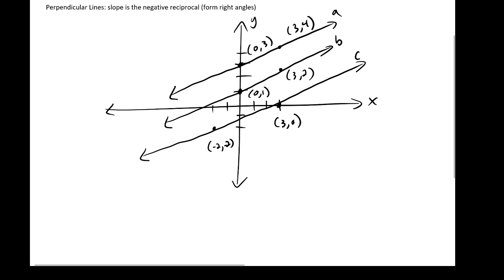Our directions are to determine which lines are parallel. Let's go ahead and get started. We're going to look at line A. In line A, we're going to need to calculate slope. So we're going to take the slope of all three of these and then compare. We're going to go ahead, x sub 1, y sub 1, x sub 2, y sub 2.